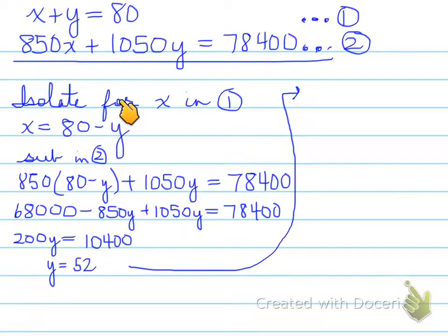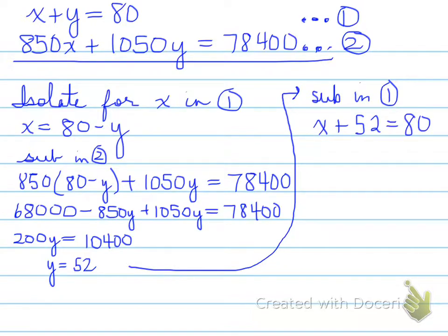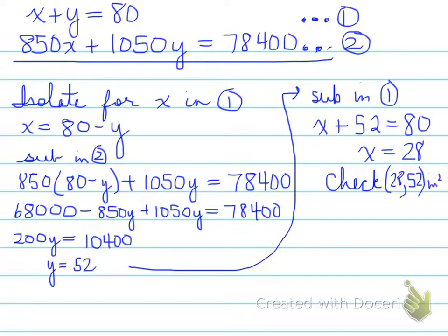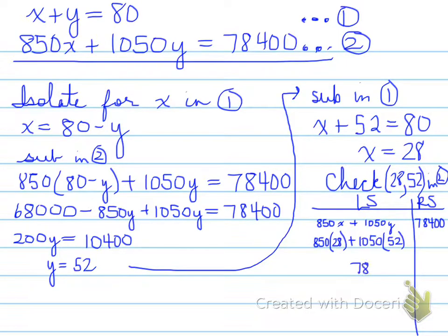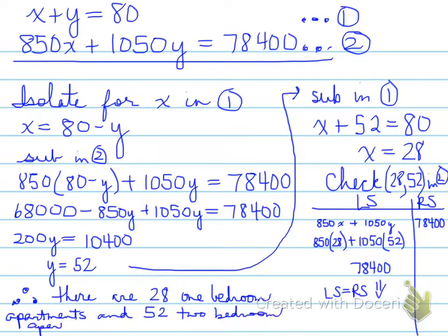Next step: sub back into equation number one. X plus 52 equals 80, so X equals 28. Now we have our two answers. We check (28, 52) by substituting into equation number two — left side equals right side. Therefore, there are 28 one-bedroom apartments and 52 two-bedroom apartments in the building.